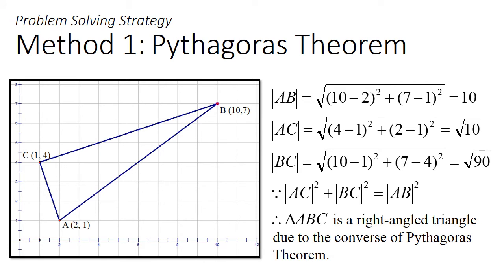The most typical approach is to use Pythagoras' theorem. You find the length of the three sides of this triangle using Pythagoras' theorem, then show that AC squared plus BC squared equals to AB squared, which implies that the triangle is a right angled triangle.